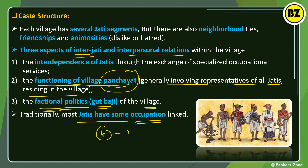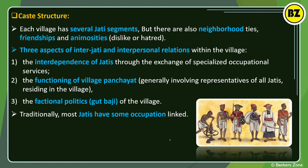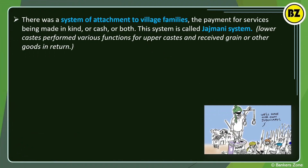Traditionally, most jati have occupation-linked roles. The kumbar makes things from mud, the goldsmith makes gold ornaments, the lohar works with iron, and the navi traditionally performs haircuts. Different jati have different occupations linked to their identity — this is very common in villages.